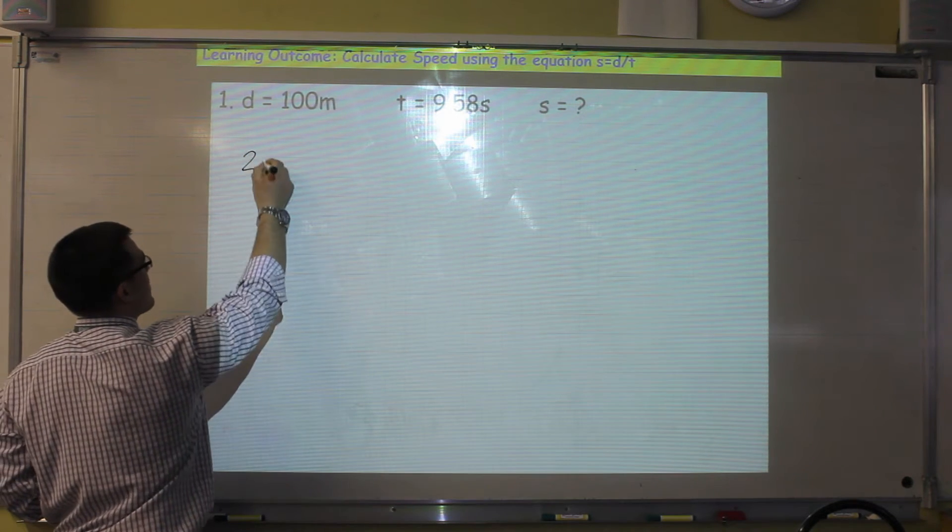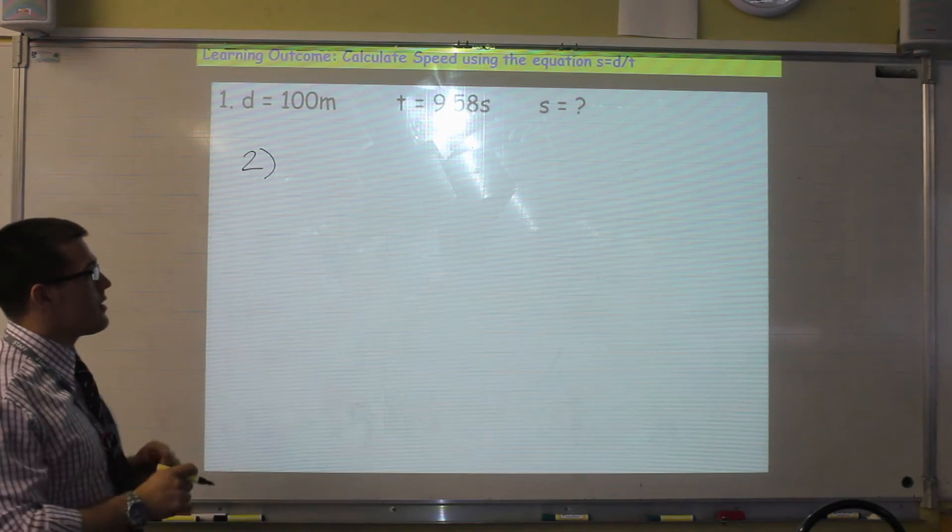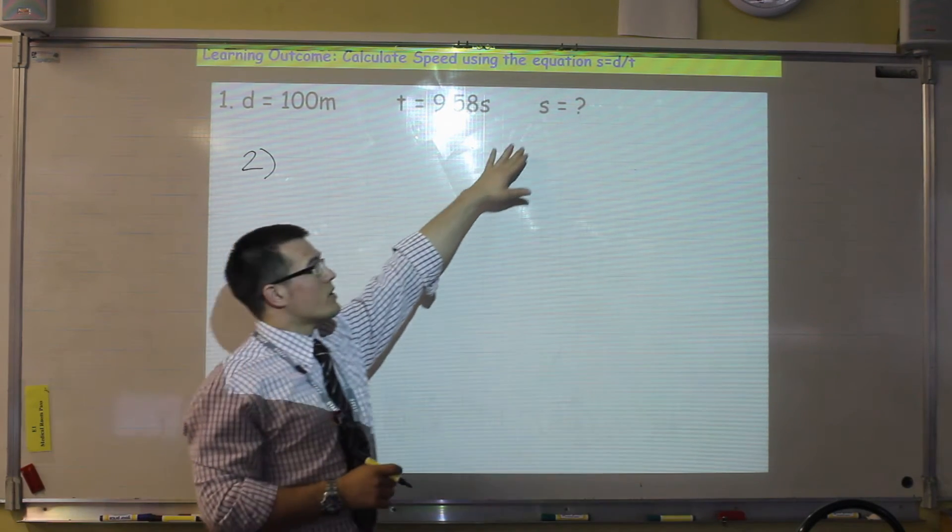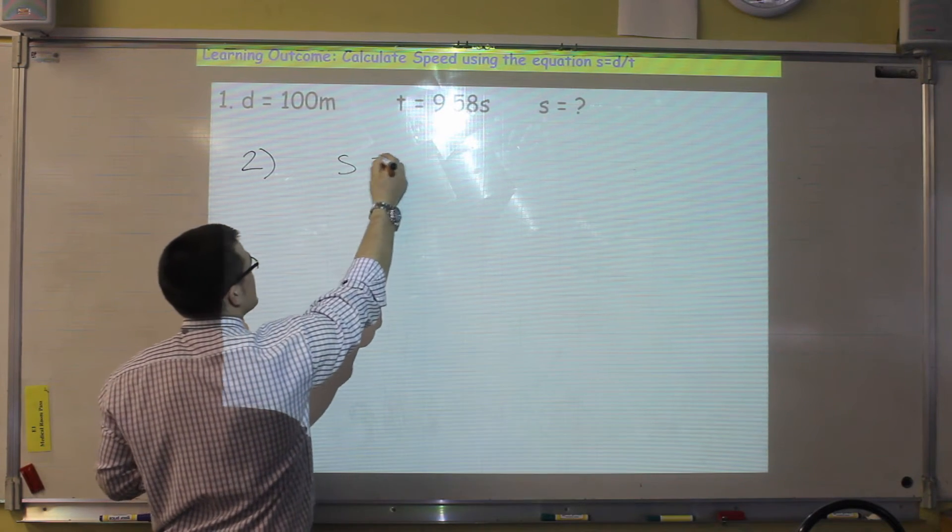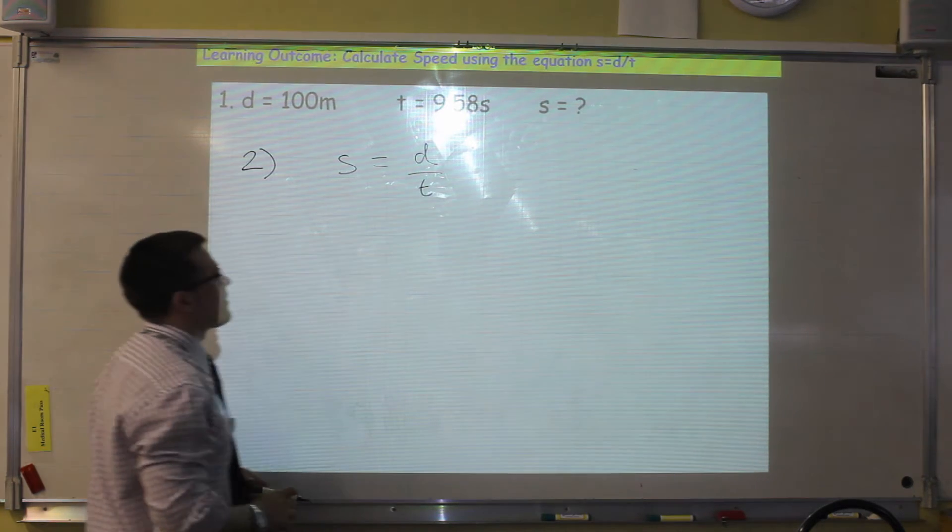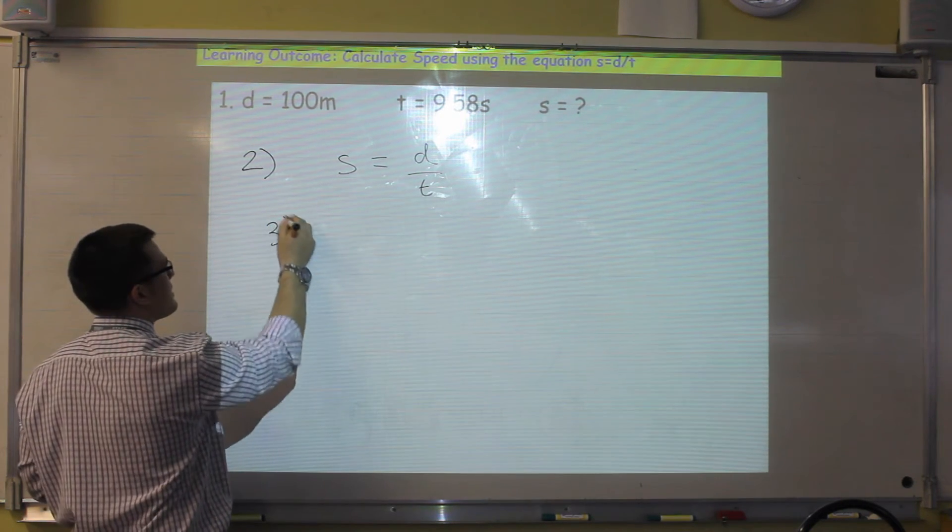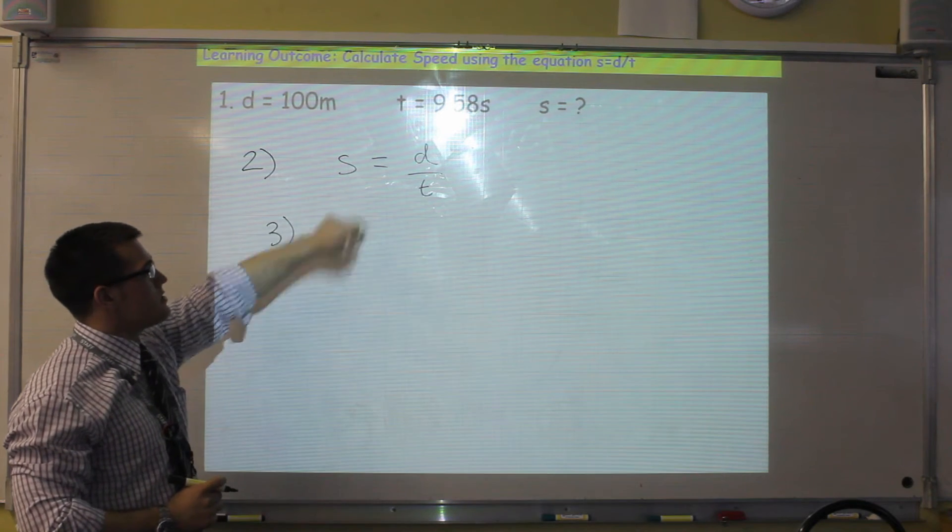The second step in answering our question is we write out our equation. So we look for our equations we're given, we find the one that contains speed, and we write it down. So speed is equal to distance divided by time.